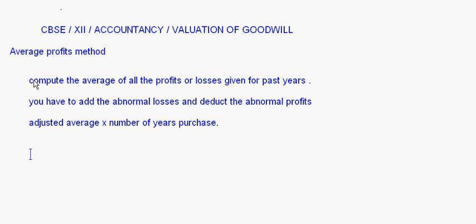In average profits you have two types: simple average and weighted average. Let's look at a question on simple average first — one which includes abnormal profits and losses. The following are the profits of a firm for the last five years.